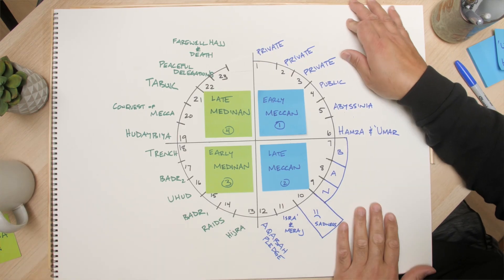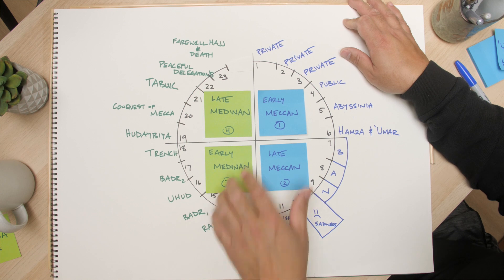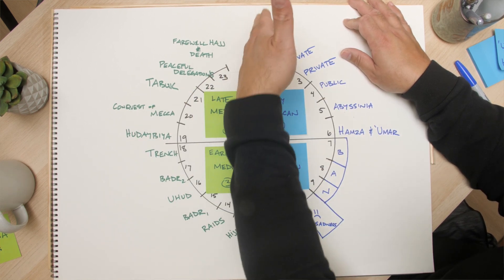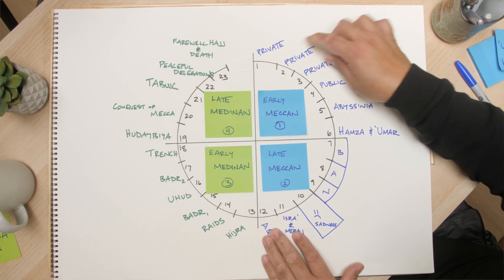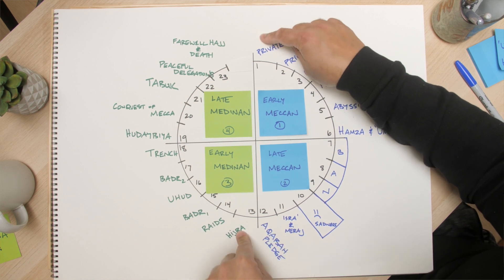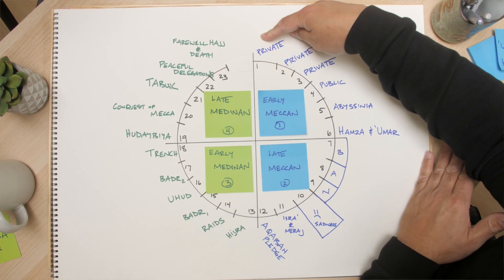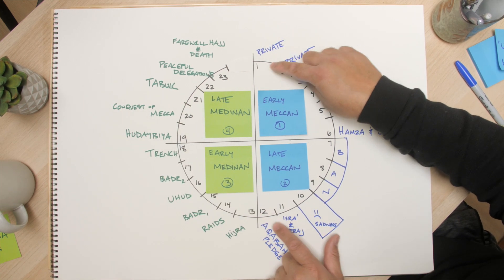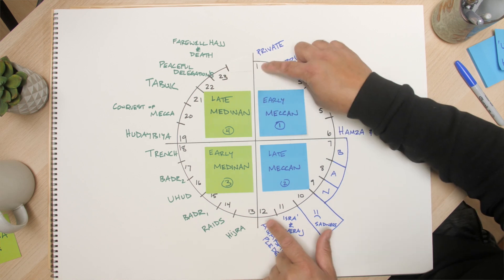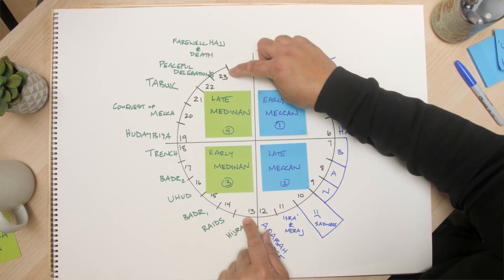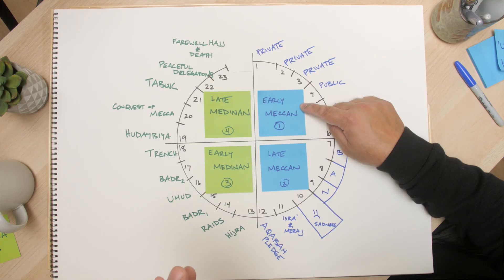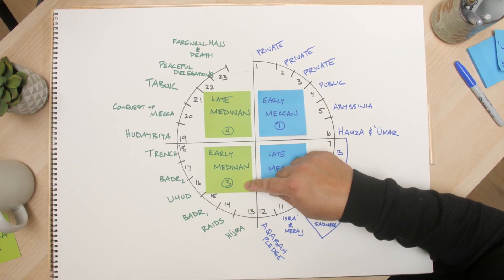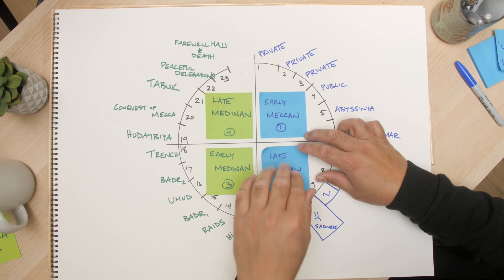Remember the Quran Your Timeline — we drew it as a circle, we cut it in half. We did the rule of the four H's: we put Hira up here and Hijra down here. This is the Meccan period, all blue, and this is the Medinan period, all green. The Meccan period is 12 years, the Medinan period is 11 years — so this goes from year 1 to 12, and this goes from 13 to 23. Then we cut it again into four quadrants: early Meccan, late Meccan, early Medinan, and late Medinan.